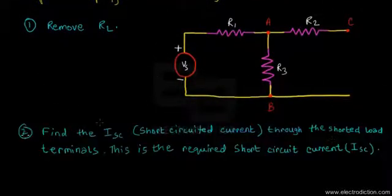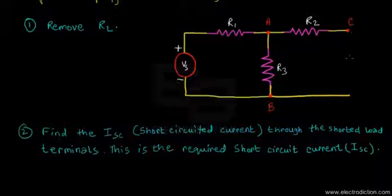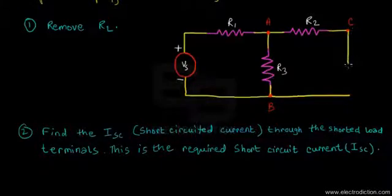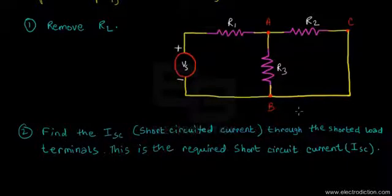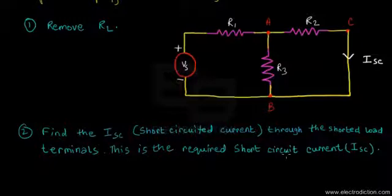Step two: find I_SC, the short-circuit current through the shorted load terminals. The load terminals are nodes C and B. To find the short-circuit current, we short these terminals. By shorting the load terminals, we obtain the modified network, and we need to find the short-circuit current I_SC at the shorted path.